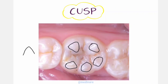Considering a single cusp, each cusp has four cusp slopes — on this side, on this side, on the mesial, and on the distal — so there are four cusp slopes in total. We also have one apex. So each cusp is made of four cusp slopes or ridges and an apex.